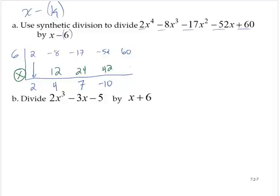negative 52 plus 42 is negative 10. Multiply, negative 10 times 6 is negative 60. And add, 60 plus negative 60 is 0.